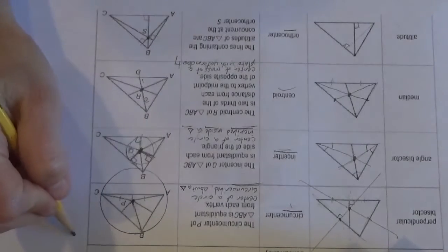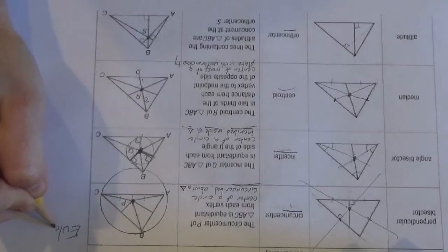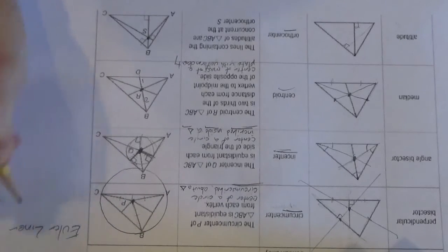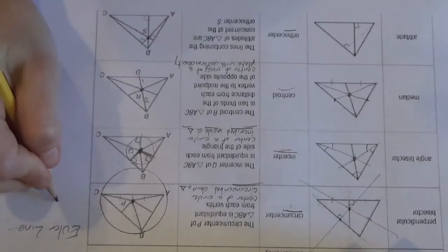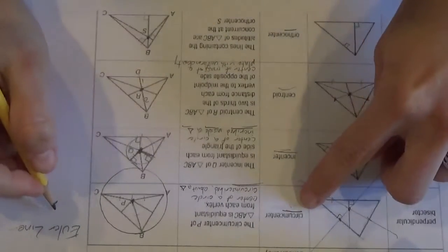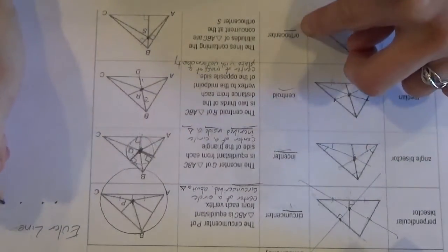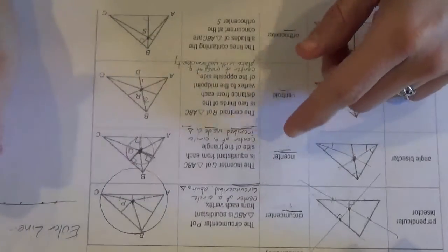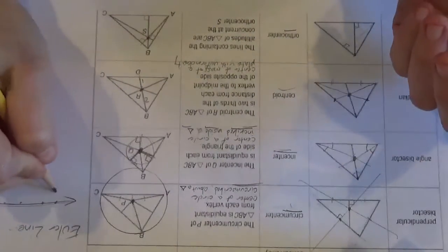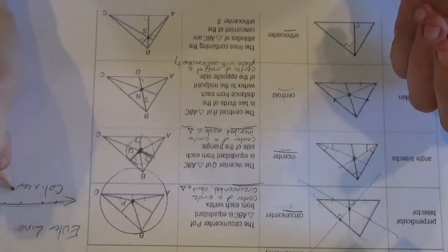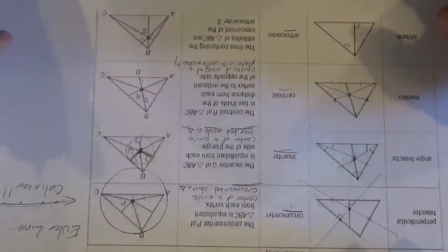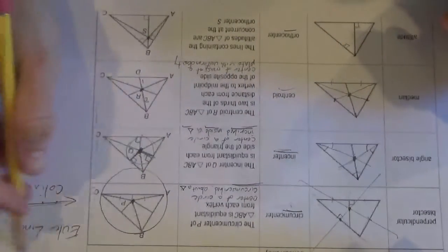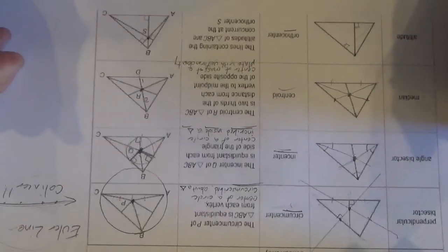Another interesting thing that you can play with is, it's called the Euler line, and so it turns out that all of these points, the circumcenter, the incenter, the centroid, and the orthocenter, all lie on the same line. They're all collinear. And it's kind of impressive that they are. You could play with constructions. You could play with coordinate geometry and find the equation of that line. It's kind of fun.